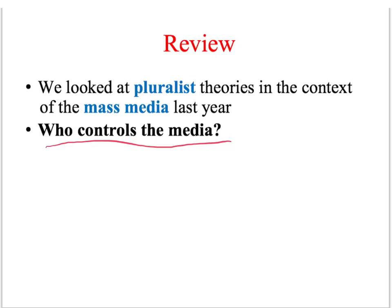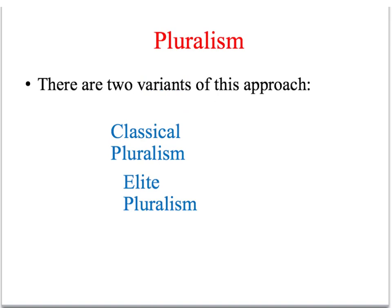There are two versions of pluralism to remember for the exam. You've got classical pluralism, which is the original approach, and then you've got a modified version called elite pluralism that tries to take into account some of the criticisms that were made of the original theory.